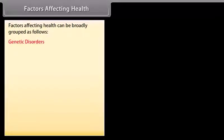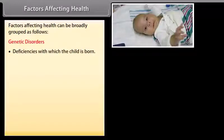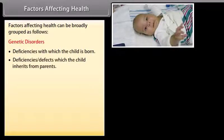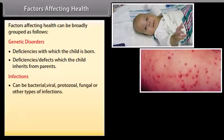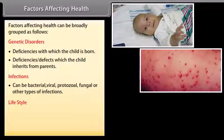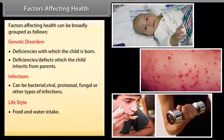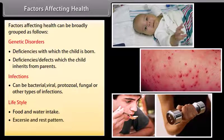Factors affecting health can be broadly grouped as follows: Genetic disorders — deficiencies with which the child is born, or defects which the child inherits from parents. Infections — can be bacterial, viral, protozoal, fungal, or other types. Lifestyle — food and water intake, exercise and rest pattern, and other acquired habits.